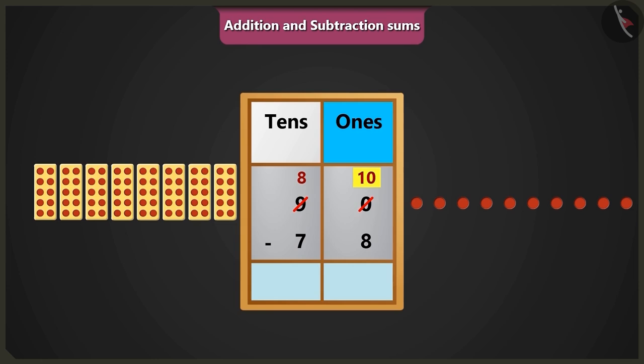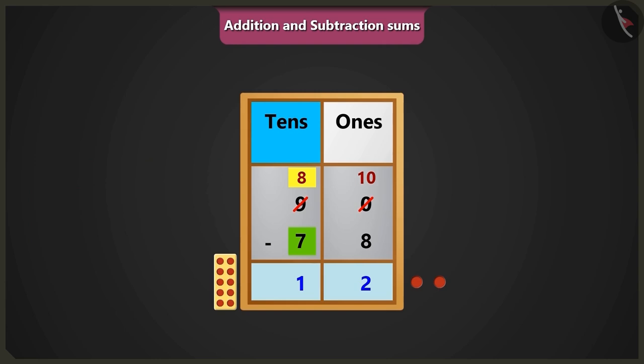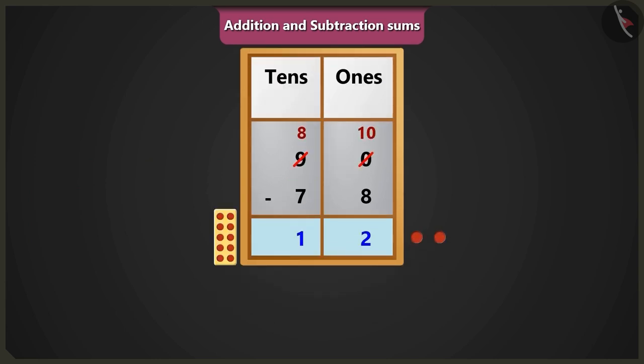So we will write 10 ones in place of 0 in the box of ones. Now if we will subtract 8 ones from 10 ones, then it will be 1 and 2 ones left. Now look here. If we will subtract 7 tenths from 8 tenths of the box of tens, then 1 ten would be left.